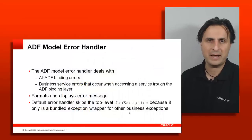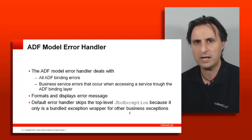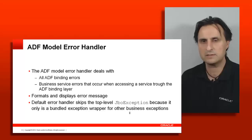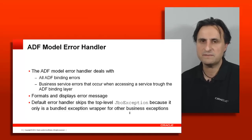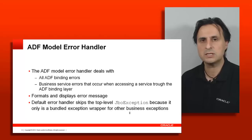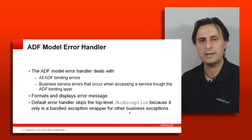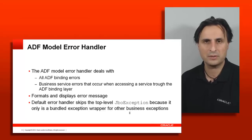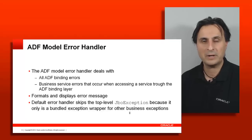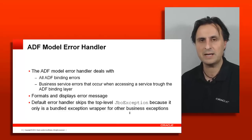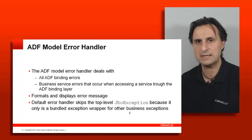The last topic to cover is error handling — there is a separate recording about error handling you may want to visit. On the binding layer you can specify error handling, and the binding is responsible for catching all of the errors raised on the business service while accessed through the binding layer. The binding layer accesses the business service several times throughout the lifecycle of a request — for validation, for update model, for invoke application, and for render response. So there are four points where your code may access the binding layer and the business service might throw an exception.